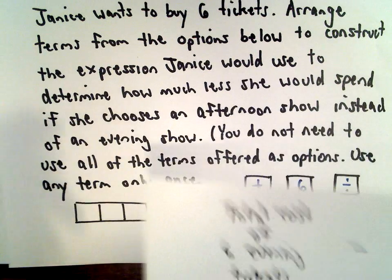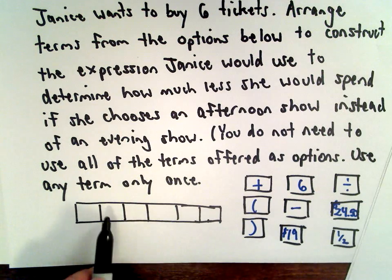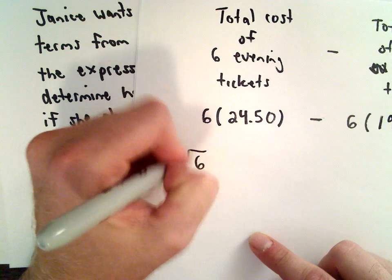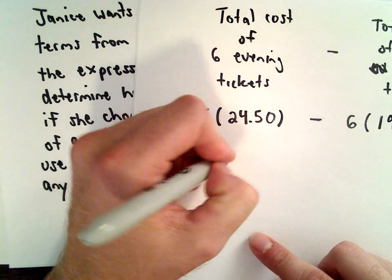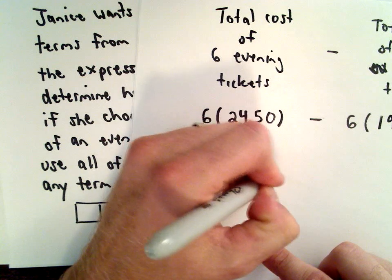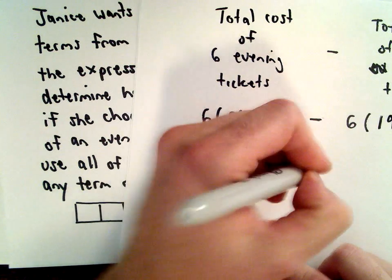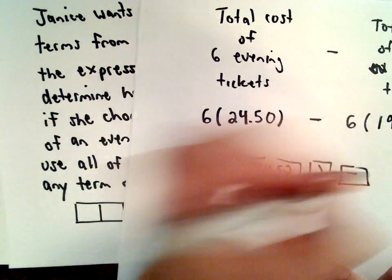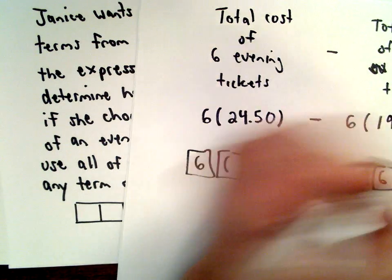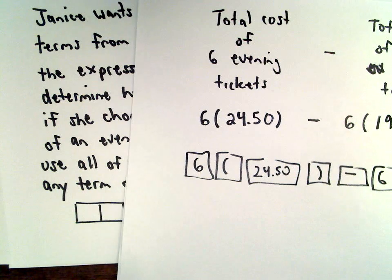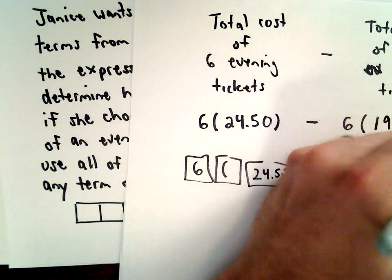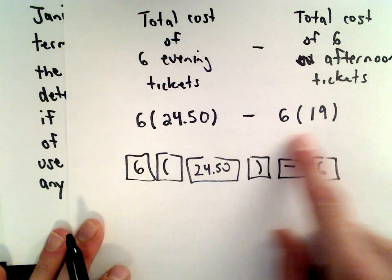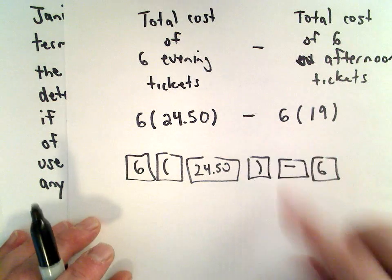Unfortunately, if you try to fit this into six boxes — six goes in one box, the left parenthesis in another, $24.50 in another, right parenthesis in another, the minus sign in another, and a six in another — all of a sudden you've used all six boxes. We don't have enough boxes to write the expression that way.